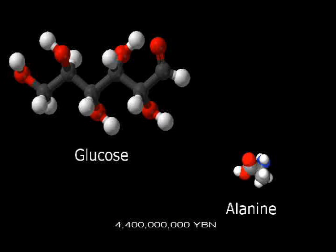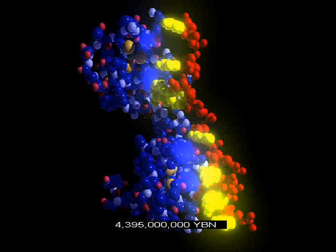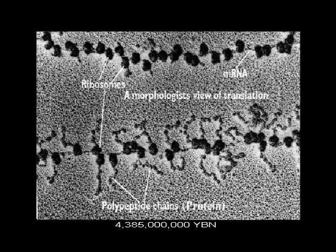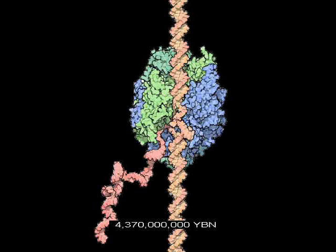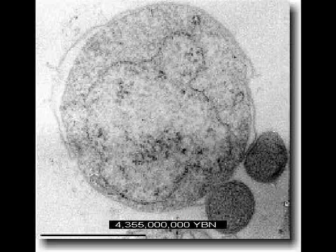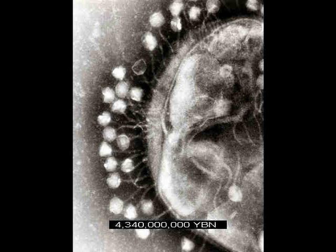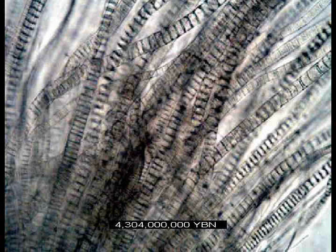Nucleic acids form on Earth. RNA links amino acids into the first proteins. A protein copies nucleic acid molecules. The first cell on Earth. DNA is surrounded by proteins. The first virus. Cells make lipids.